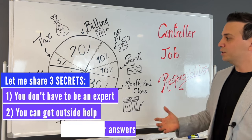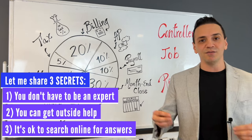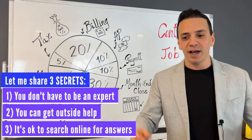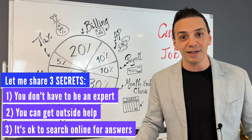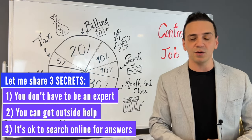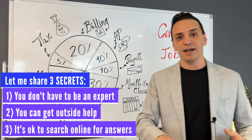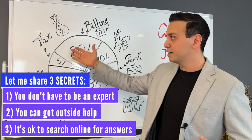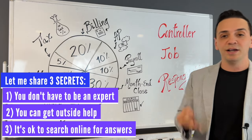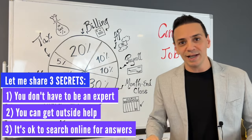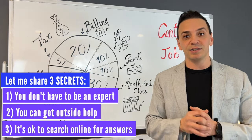Secret number three is that you can still Google stuff. Right now, as a controller working in finance and accounting for a decade and a half, I'm still finding myself searching for answers online. I don't know the answer to everything. So to recap: you don't have to be an expert in each area; you can rely on outside help in areas like tax, AP, and payroll; and you don't have to know all the answers — you can search stuff online. This is commonplace in today's environment.